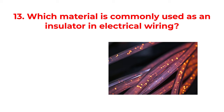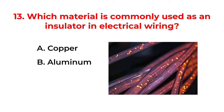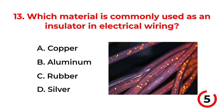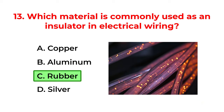Which material is commonly used as an insulator in electrical wiring? A. Copper. B. Aluminum. C. Rubber. D. Silver. The correct answer is option C: Rubber.